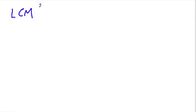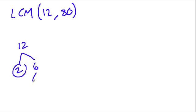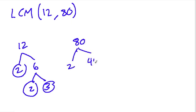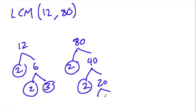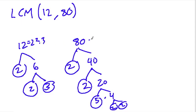Let's look at one more example: the LCM of 12 and 80. Let's take 12 and write its prime factorization: 2 times 6, and 6 equals 2 times 3. So 12 is 2 squared times 3. Now for 80: 80 equals 2 times 40, 40 equals 2 times 20, 20 equals 5 times 4, and 4 equals 2 times 2. So 80 equals 2 to the 4th power times 5.